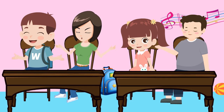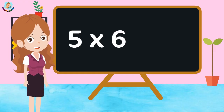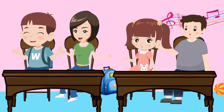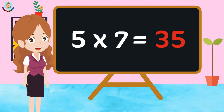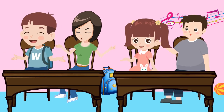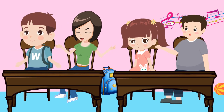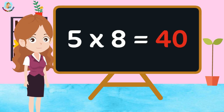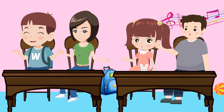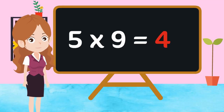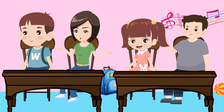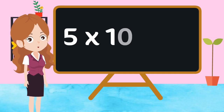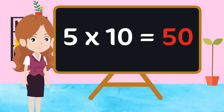5 6's are 30. 5 7's are 35. 5 8's are 40. 5 9's are 45. 5 10's are 50.